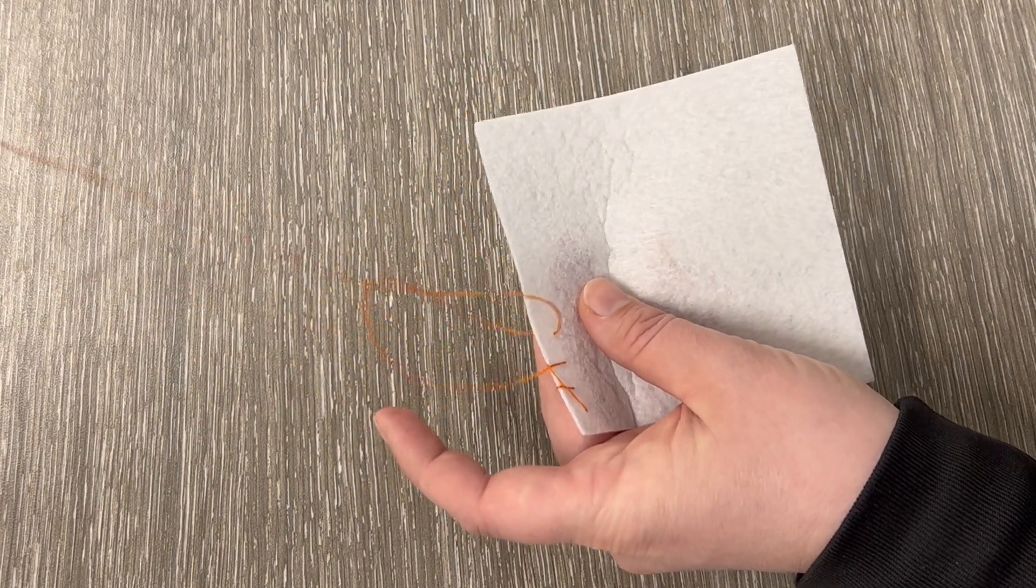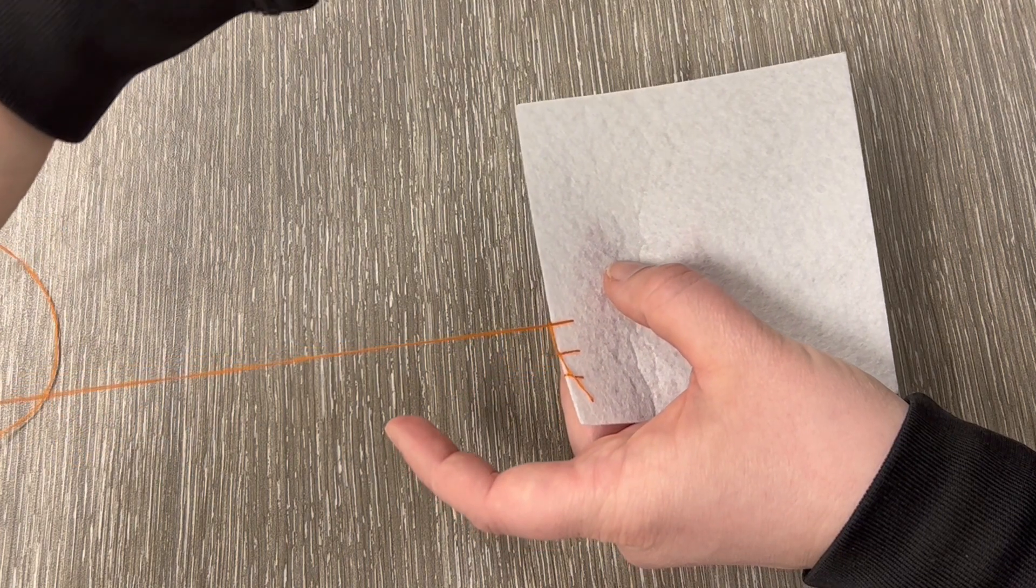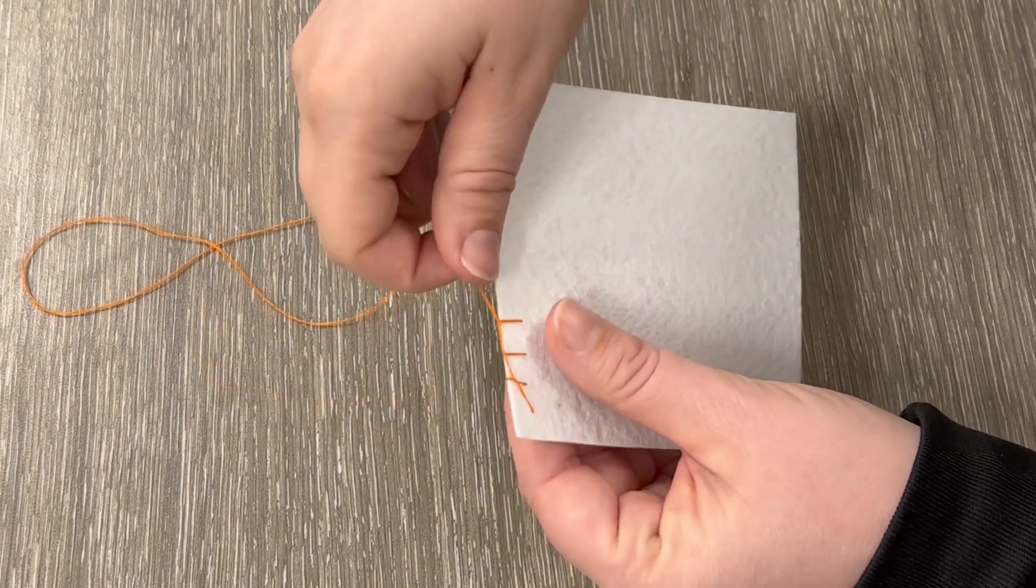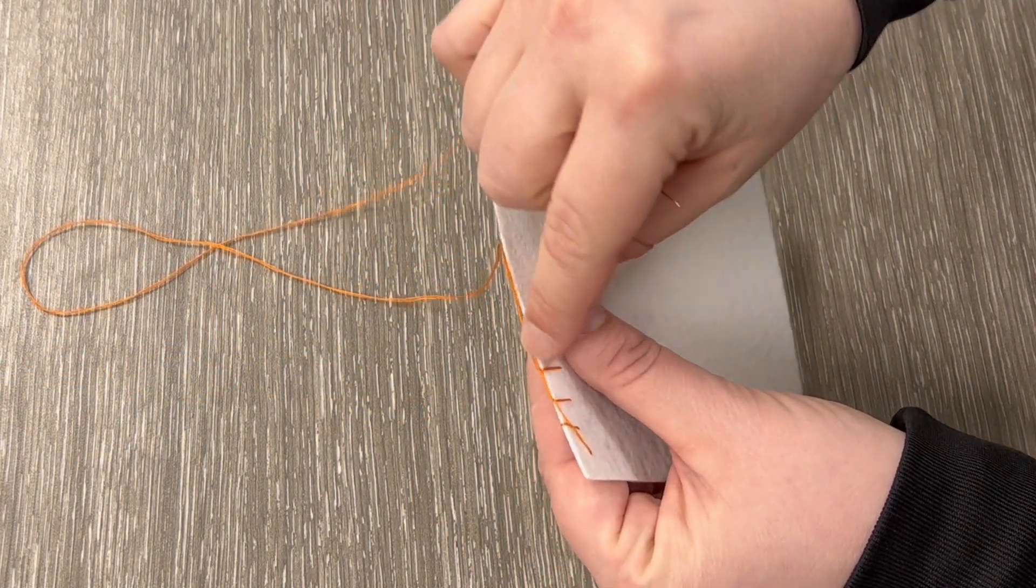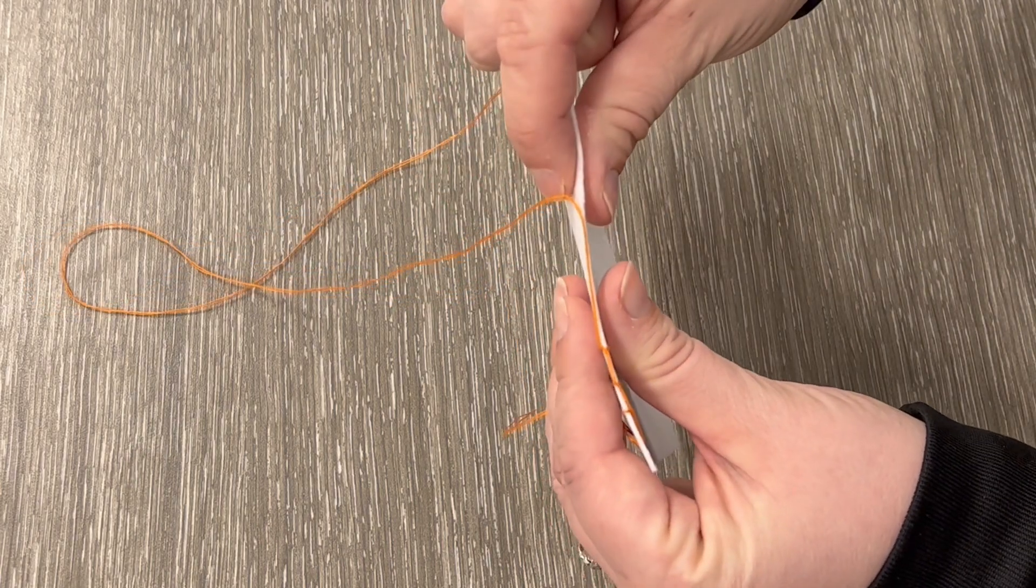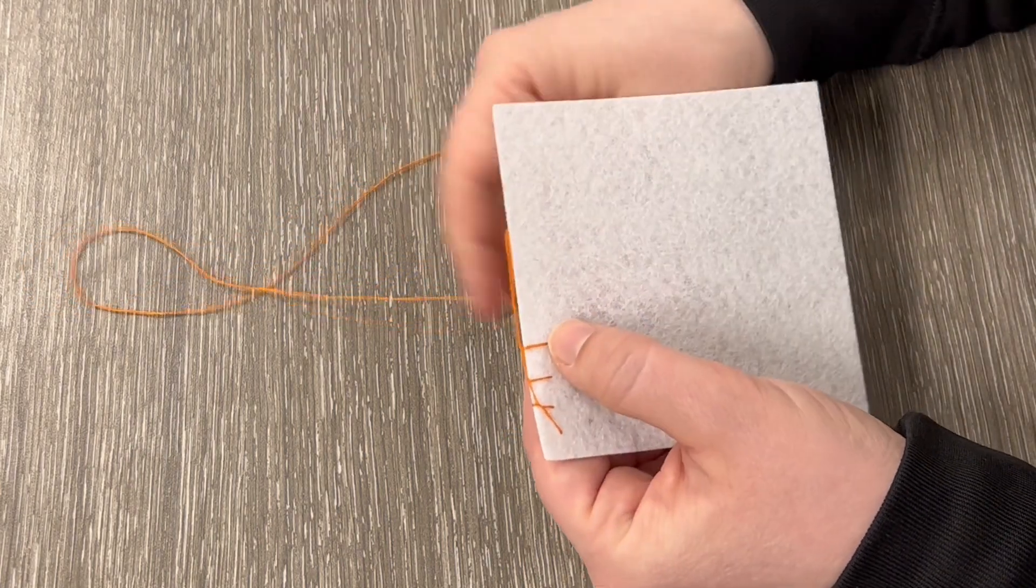...through to the back and pull it. I'm not pulling it super tight because I want those stitches right there on the edge. That's what makes it the blanket edge - you see that right there on the edge?